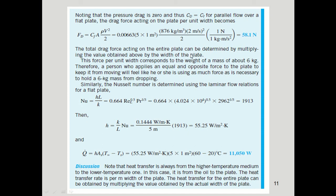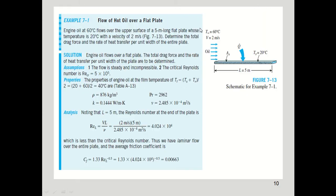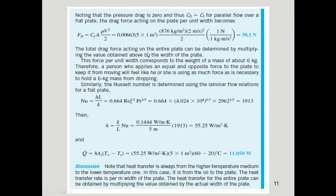The total drag force on the entire plate is determined by multiplying this value by the total width of the plate. In this calculation we considered only 1 meter width, so the result of 58.1 N is per meter width. Multiplying by the full plate width gives the total frictional drag force.